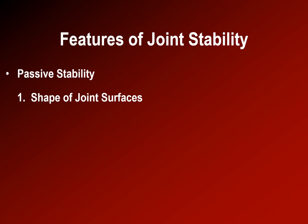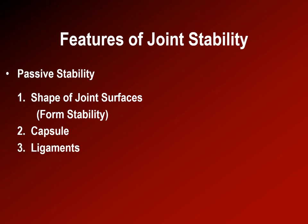Additional sources of passive stability include the capsule's connective tissue — especially the stratum fibrosum — which holds the joint surfaces together, ligaments as structured bands of connective tissue, and sometimes accessory structures like menisci or labrum. Joints also have a vacuum — a negative pressure — which you may experience in gross anatomy when opening a joint capsule and hearing air rush in.